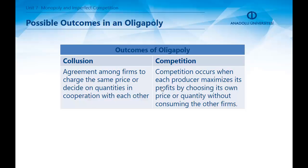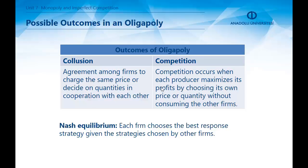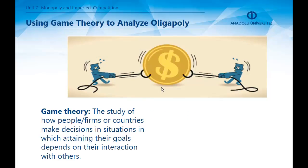The Nash equilibrium is a situation in which each firm chooses the best response strategy given the strategies chosen by other firms. This concept is named after economist and Nobel laureate John Nash. Note that this is a non-cooperative equilibrium concept — firms are acting independently and not in cooperation with each other.